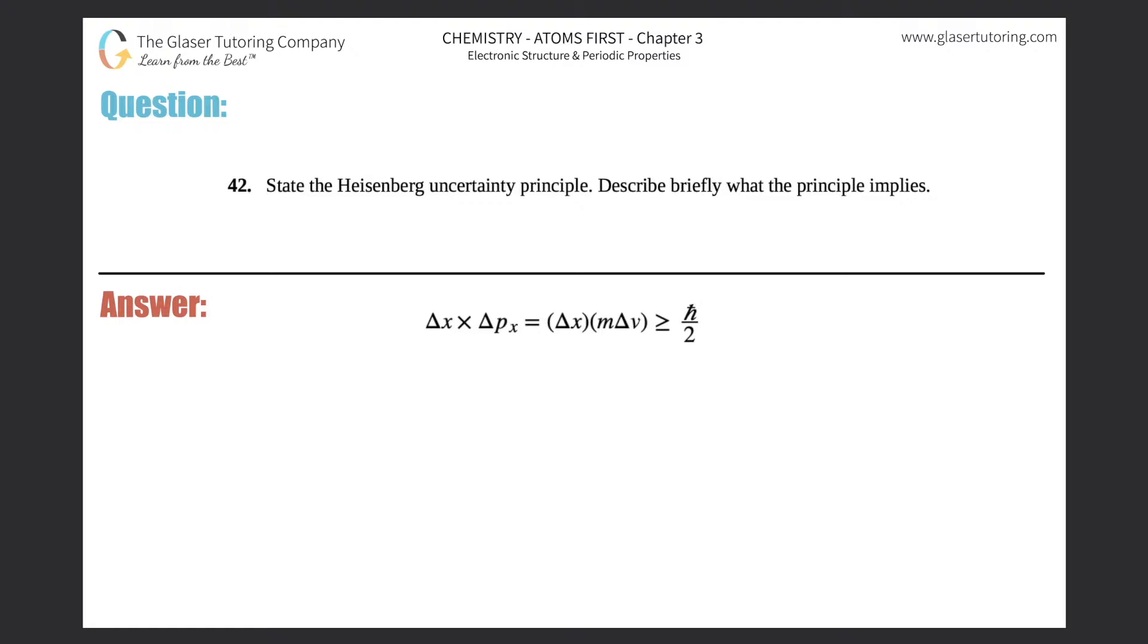Number 42: State the Heisenberg uncertainty principle and describe briefly what the principle implies. We could think of it as the Heisenberg uncertainty principle, or we could think of it as the Walter White uncertainty principle. By the way, if you guys have not seen Breaking Bad, go see it. It's a must. Love that TV show.